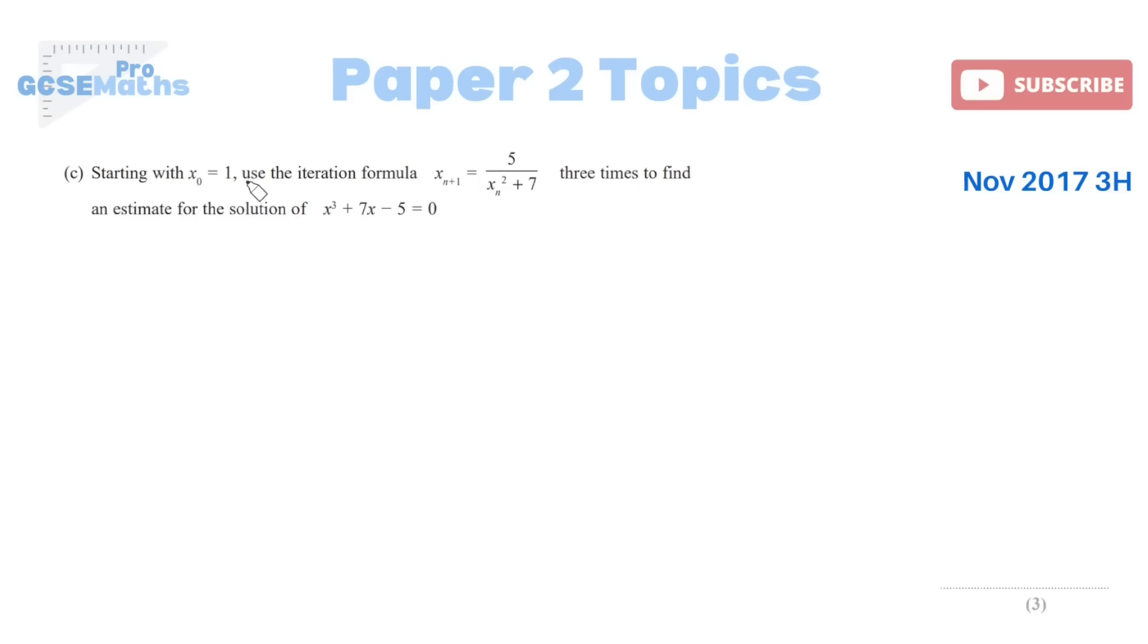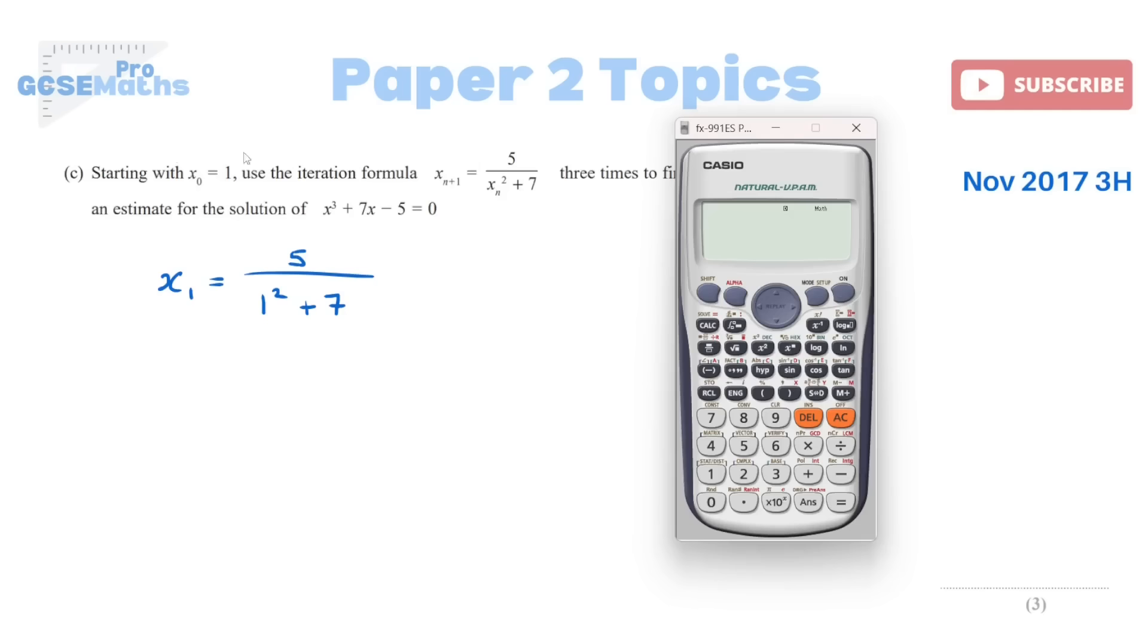Starting with x 0 is 1, use the iteration formula, x n plus 1, 5 divided by the previous answer squared plus 7. Three times to find an estimate for the solution. This is how I would set up my calculator. Whatever their starting value is, you put that into your calculator, press equals. Now it's saved in the answer button. Then type in the formula. Wherever it says x n, you put answer. Don't forget that in this case they have squared it, and then they've added 7. So that's my formula. Now that I've set it up like this, all I need to do is press equals three times.